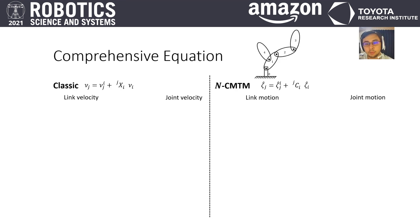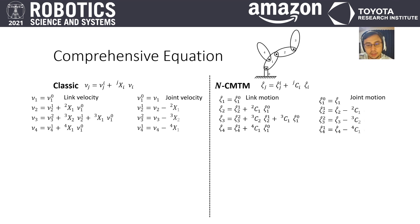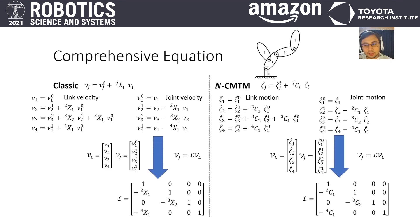We can define the same comprehensive equation as from classic mechanics. For analogy, we will develop both in parallel. From the forward kinematics relationship and the model, we define all link motions and all joint motions. VL and VEG are comprehensive motion vectors. The relationship between the two are then given by the matrix L and its inverse.